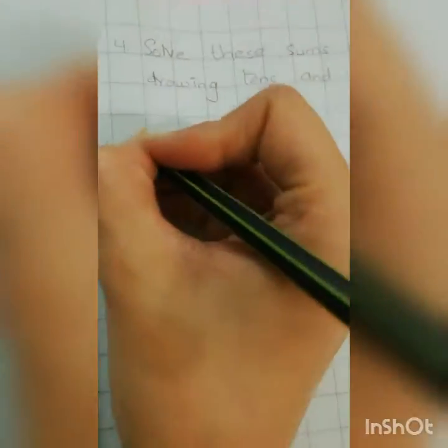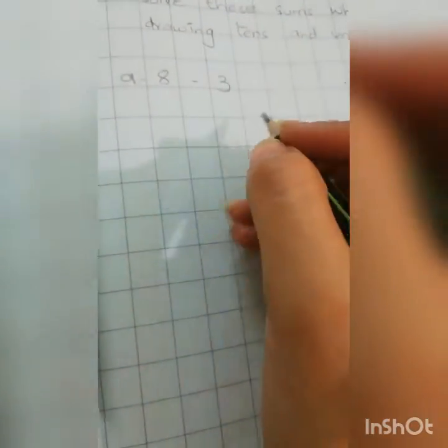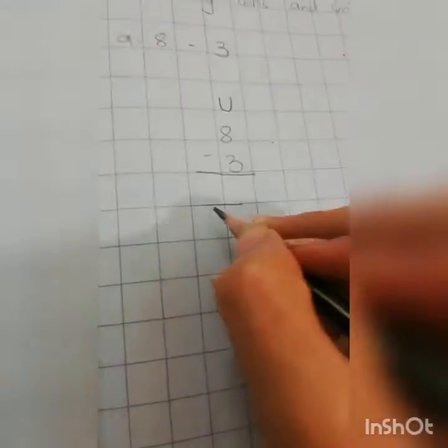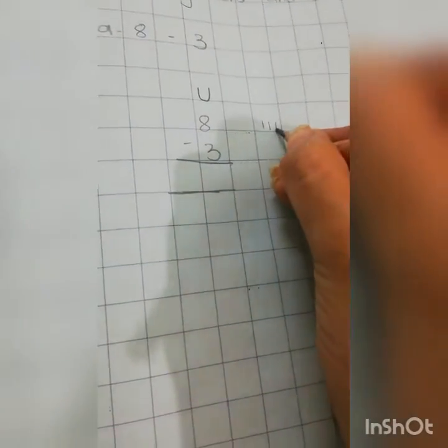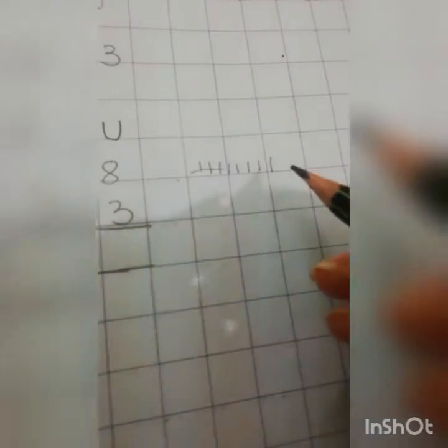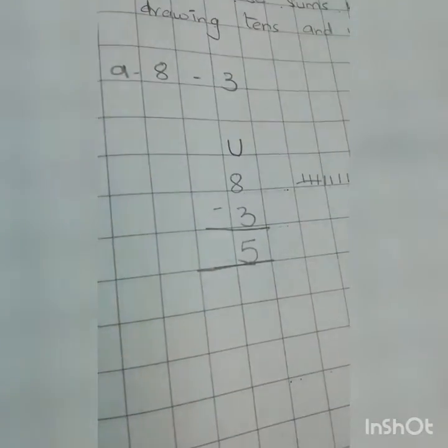We will solve here like this. Number A: 8 minus 3. There is no tens, there is only units. So first we will solve only units. If you want to draw the bars, you can draw the bars as well. Draw 1 through 8. You have to minus 3. How much remaining? 5. So 8 minus 3 is equals to 5.